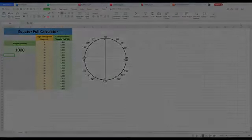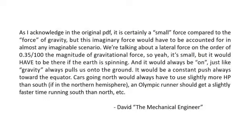This is what David told me via email. As I acknowledge in the original PDF, it is certainly a small force compared to the force of gravity, but this imaginary force would have to be accounted for in almost any imaginable scenario. We're talking about a lateral force on the order of 0.35 over 100, the magnitude of gravitational force. So yeah, it's small, but would have to be there if the Earth is spinning. And it would always be on, just like gravity always pulls us onto the ground. It would be a constant push always towards the equator. Cars going north would always have to use slightly more horsepower than south if in the northern hemisphere. An Olympic runner would get a slightly faster time running south and north, et cetera.